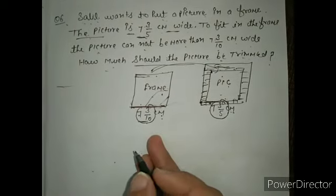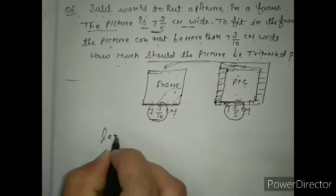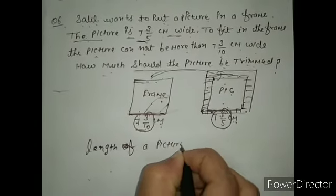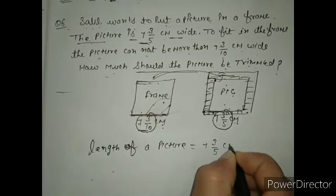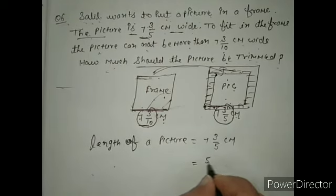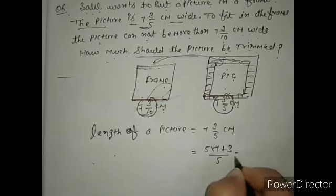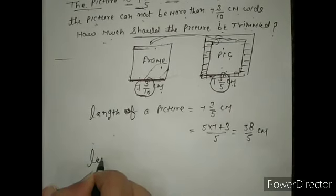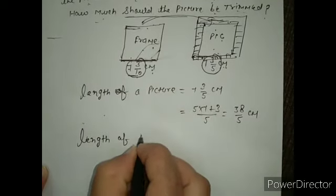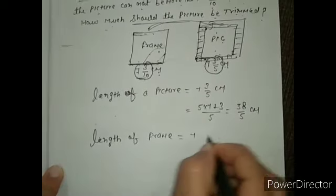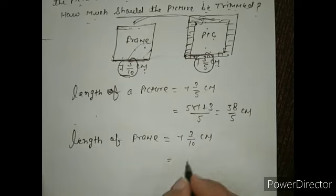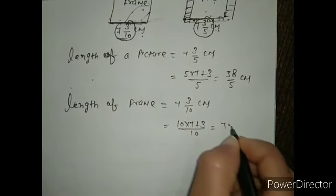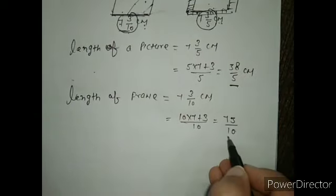First write the length of the picture. The picture length is equal to 7 and 3/5 centimeters. Write in improper fraction: 5 into 7 plus 3 divided by 5, which gives 38/5 centimeters. Then write the length of the frame. Frame length is 7 and 3/10 centimeters. In improper fraction: 10 into 7 plus 3 divided by 10, which simplifies to 73/10. This length is bigger and the other is smaller, so we subtract.